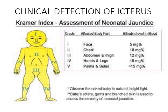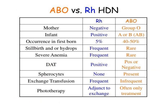Key differences between ABO and Rh incompatibility: ABO can occur in the first pregnancy, while Rh incompatibility usually occurs in the second pregnancy after the mother has been sensitized to the fetal Rh antigen. In Rh incompatibility the mother is Rh-negative; in ABO the mother must be blood group O. Stillbirth and hydrops fetalis in severe anemia are more common in Rh incompatibility, while in ABO they are rare.